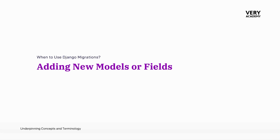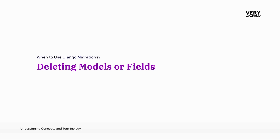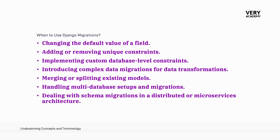Migrations at a basic level are used to apply changes when we add new models or fields, modify existing models or fields, or potentially delete models or fields. Now, 99% of tutorials and resources you'll find will be utilising the Django migration system for those types of operations. And to be fair, for many projects that's pretty much all you'll need it for. But as your application scales and becomes more complex, there are more reasons to utilise the Django migration system.